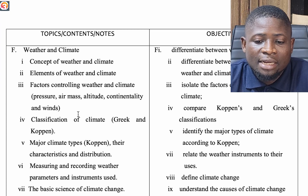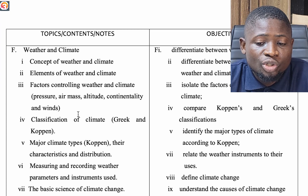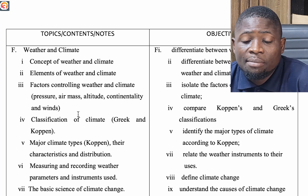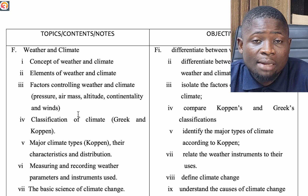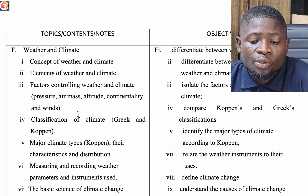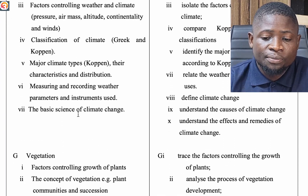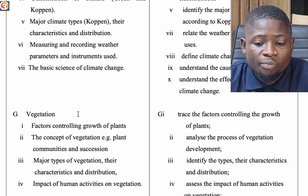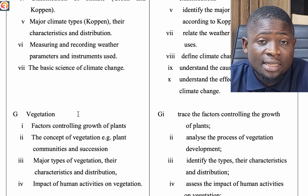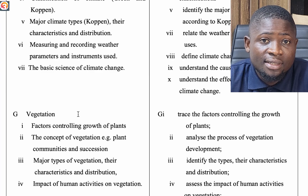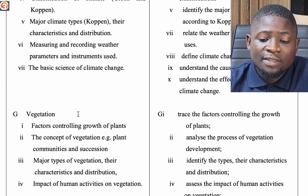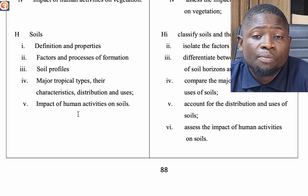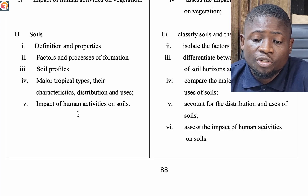Next we look at weather and climate: the concept of weather and climate, elements, and factors controlling weather and climate including pressure, air masses, altitude, continentality, and winds. We cover classification of climate, major climate types, their characteristics and distribution, and measuring and recording weather parameters and instruments used, including the basic science of climate change. Then vegetation: factors controlling growth of plants, the concept of vegetation such as plant communities and succession, major types of vegetation, their characteristics and distribution, and the impact of human activities on vegetation. Also soils: definition, properties, factors and processes of formation, soil profiles, major tropical types, characteristics, distribution and uses.